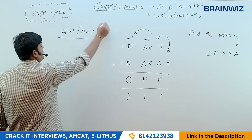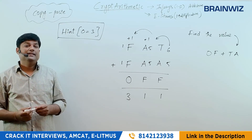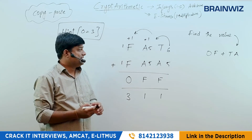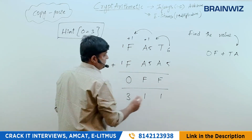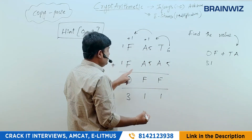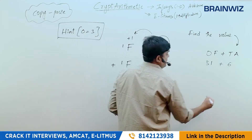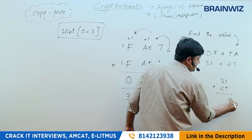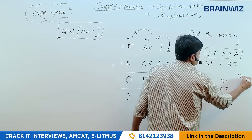Infosys gives hints to help you solve these. Now the question asks for OF plus TA. O=3, F=1, so OF=31. T=6, A=5, so TA=65. Therefore 31+65: 1+5=6, 3+6=9, giving 96. The answer is 96.